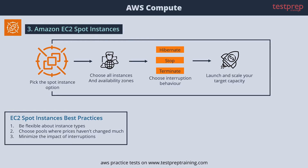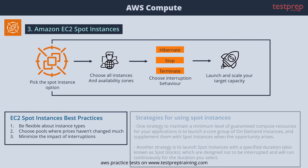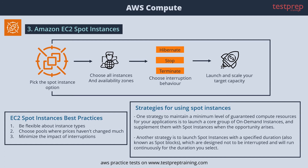Three: minimize the impact of interruptions. Amazon EC2 Spot's hibernate feature allows you to pause and then resume Amazon EBS-backed instances when capacity is available. You can also stop or terminate your spot instances when EC2 reclaims the capacity back, with two minutes of notice. One strategy is to launch a core group of on-demand instances and supplement them with spot instances when the opportunity arises. Another strategy is to launch spot instances with a specified duration, which are designed not to be interrupted and will run continuously for the duration you select.